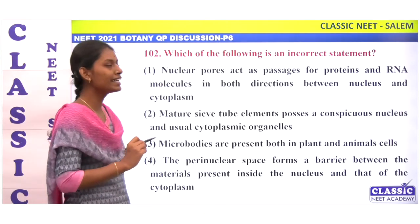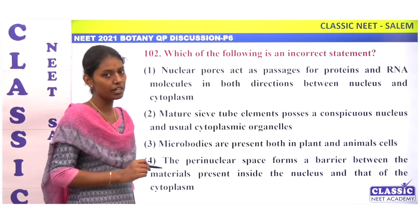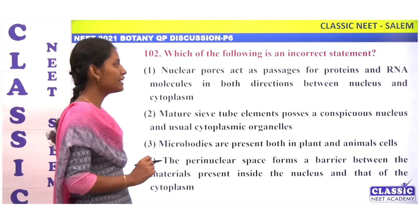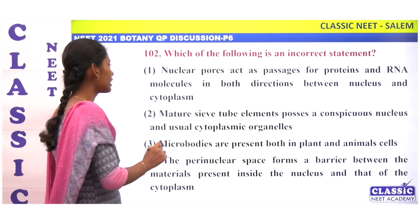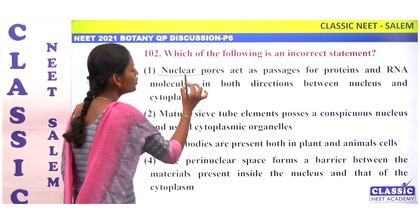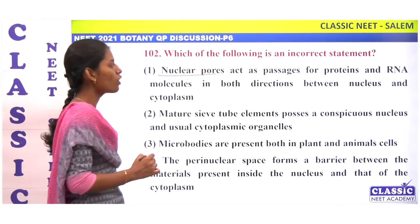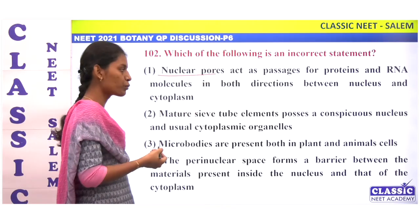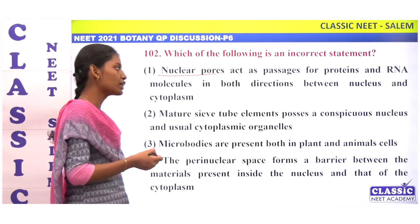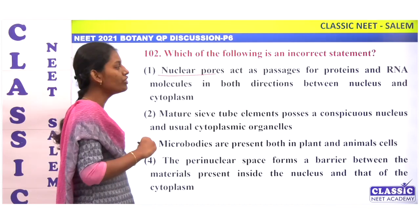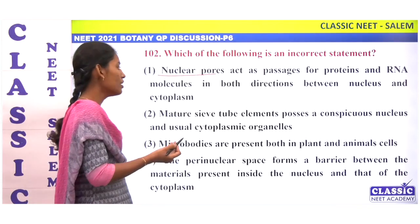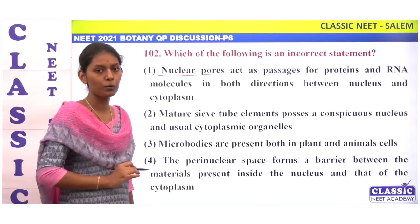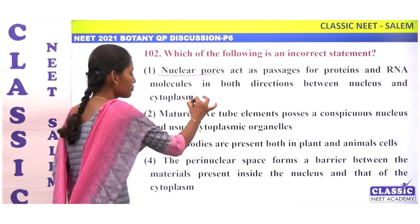Next question: which of the following is an incorrect statement? We have 4 statements and one is incorrect. Statement 1: nuclear pores act as passage for protein and RNA molecules in both directions between nucleus and cytoplasm — this is a correct statement.